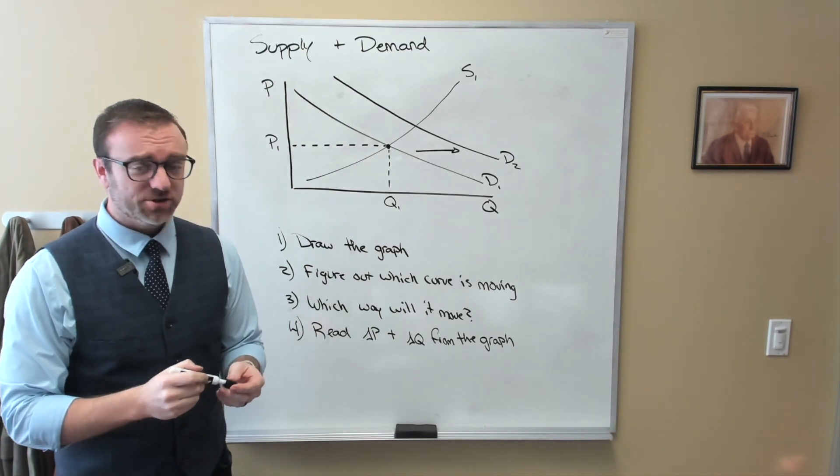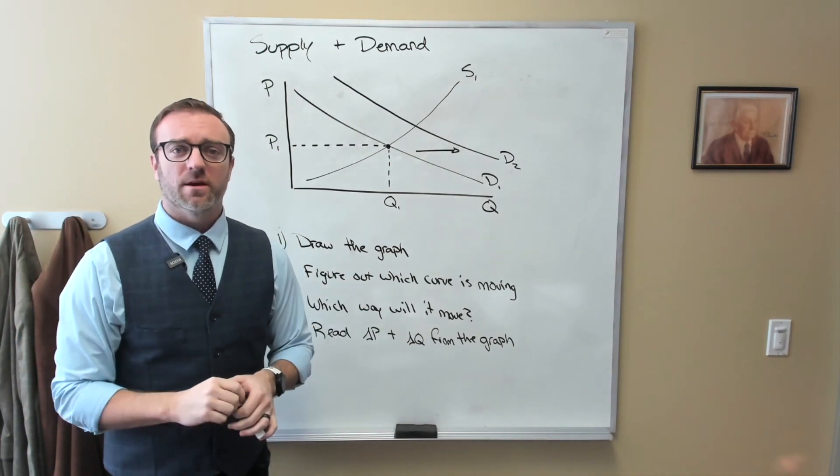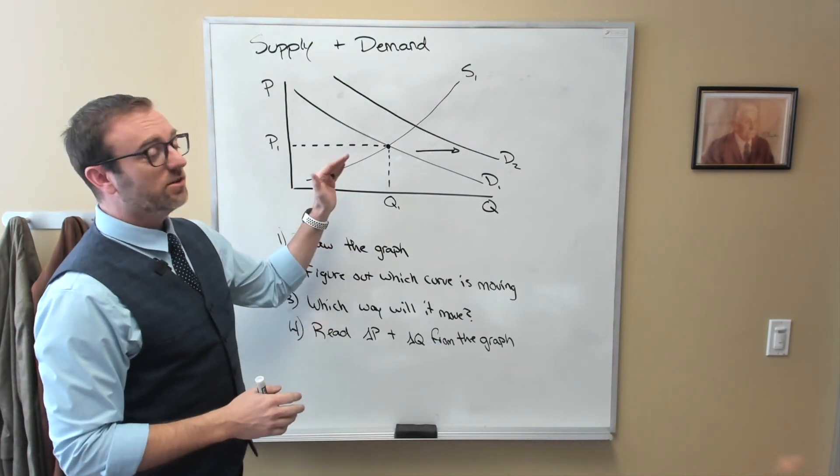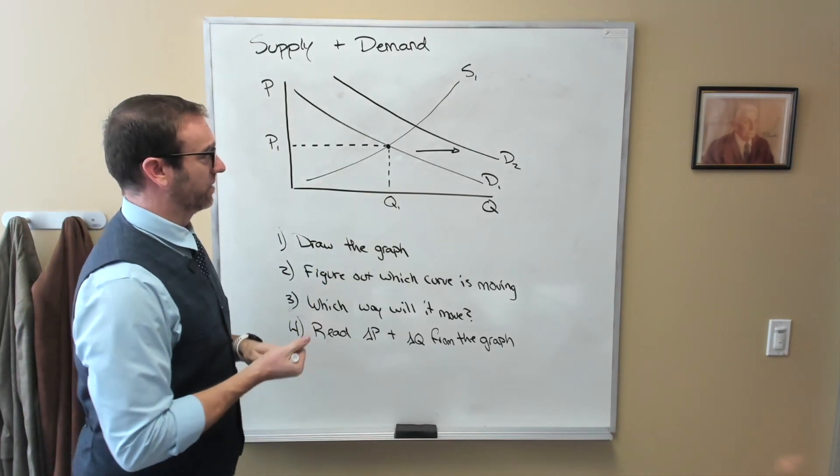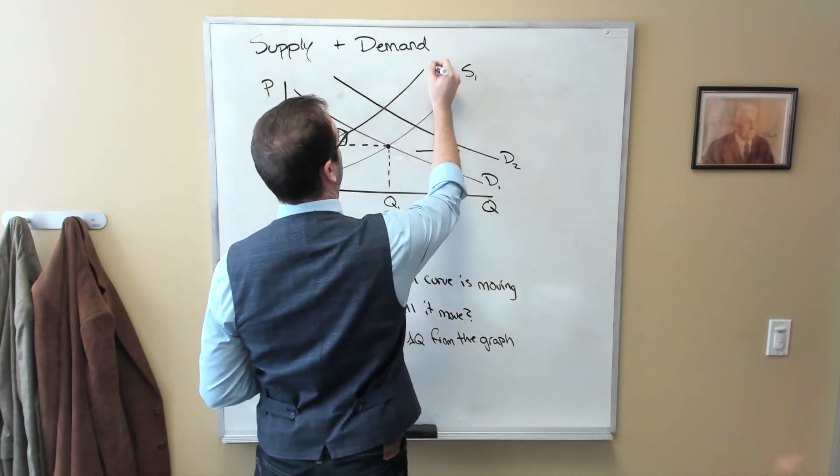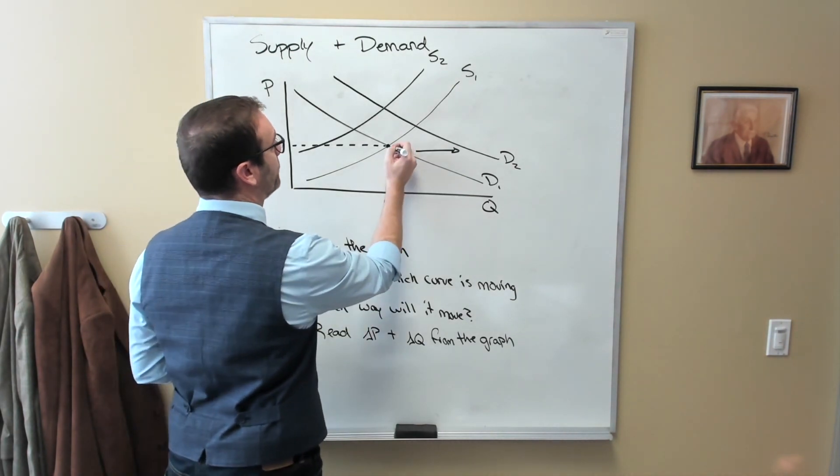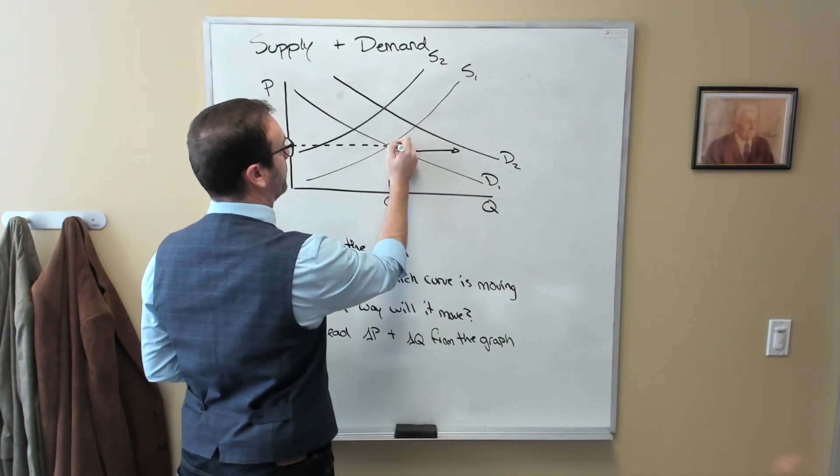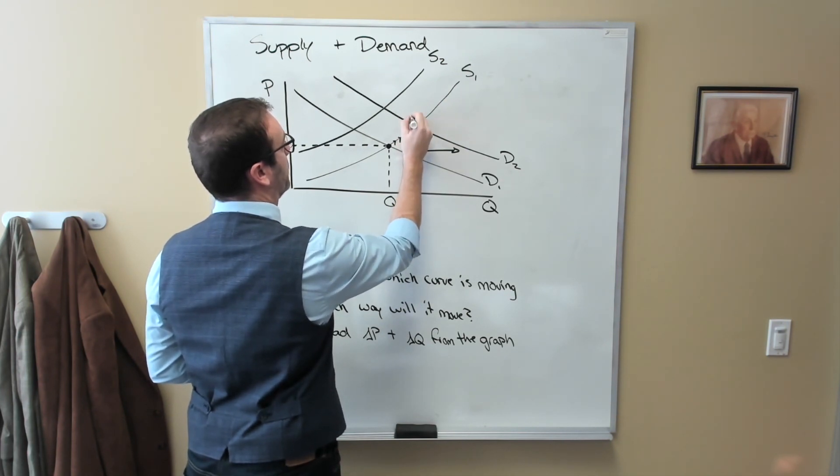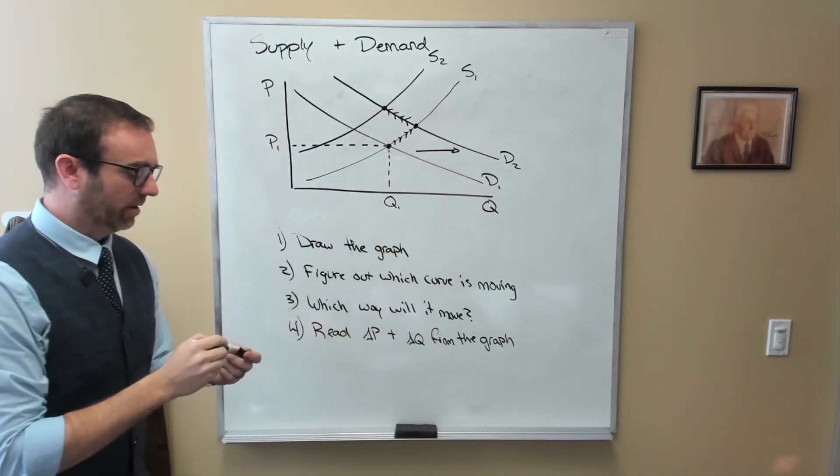However, if we're changing the means by which healthcare is allowed to be provided, again, in order to make everything safer, what that's going to do is it's actually going to decrease the supply of healthcare. So we would shift the supply curve to the left. So what we'd be doing is we'd be moving from our initial equilibrium point here out to this new equilibrium point here, and then back up to the left to our final equilibrium point right here.